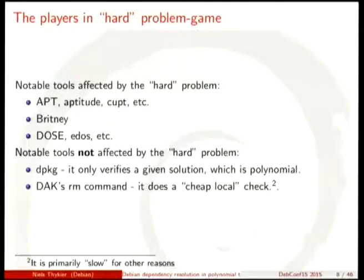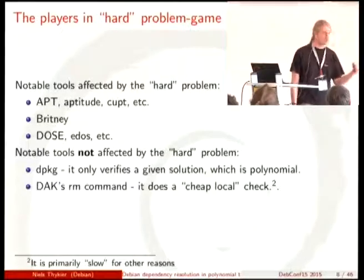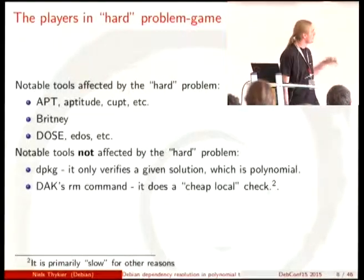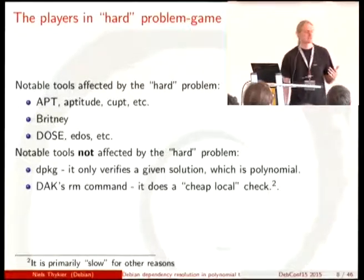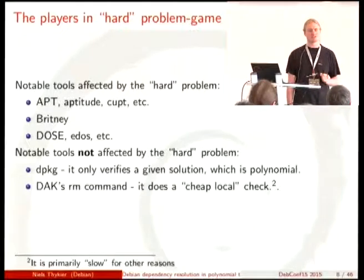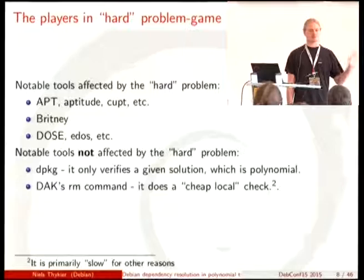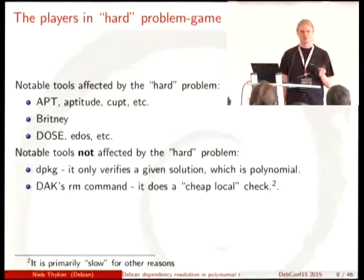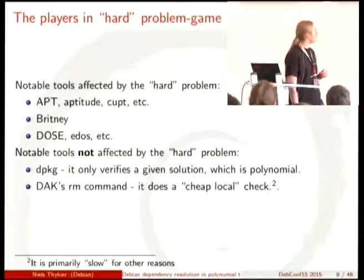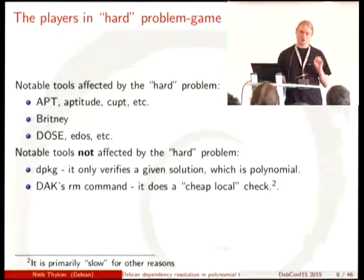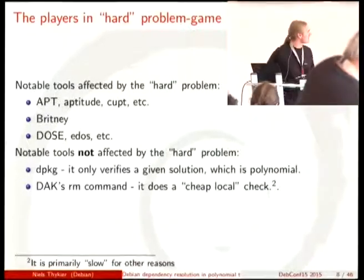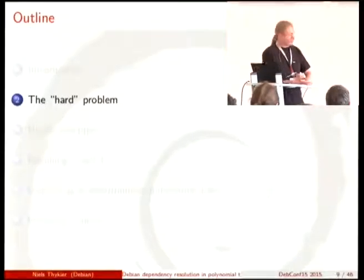So, the hard problem. First, the players: we've got apt, aptitude, cupt, whatever. We've got Brittany, Dose, edos, whatever its name is today — they should be solving the hard problem. Notable tools not affected: dpkg, which truly figures out if you're missing a dependency, says it cannot resolve this and gives up. That is the only thing it can do, which means it only verifies a solution — known to be polynomial — and therefore it's not a game player here. dpkg-rrm is also doing a polynomial time check; it just happens to be slow for other reasons. But we're moving on to the hard problem itself.